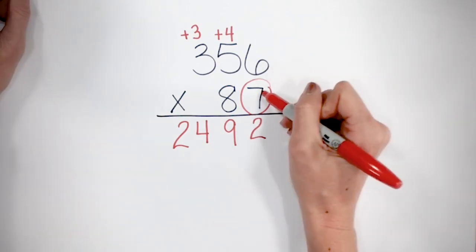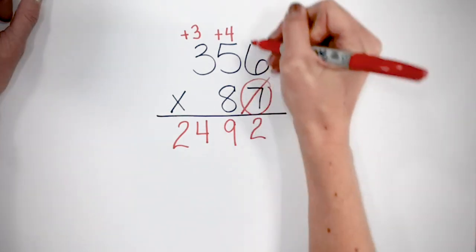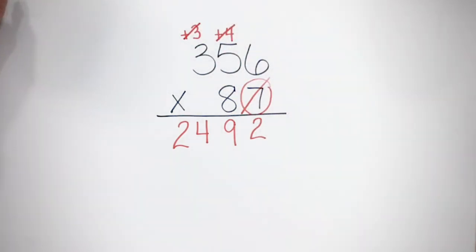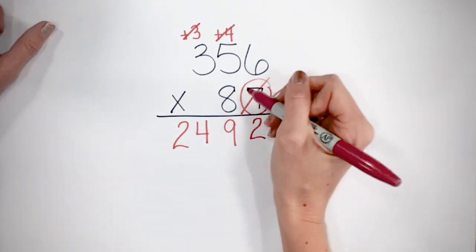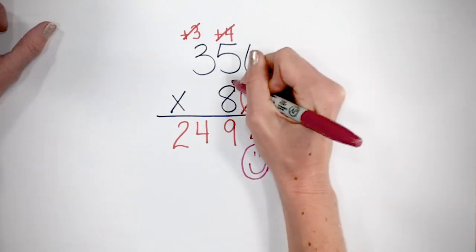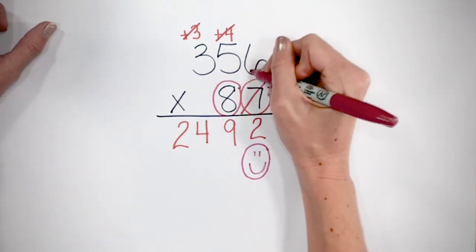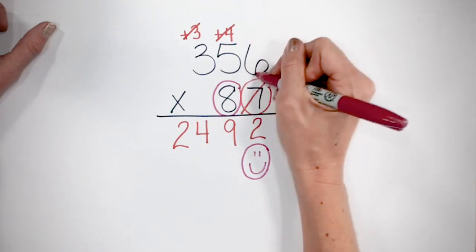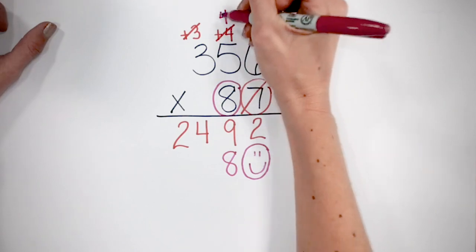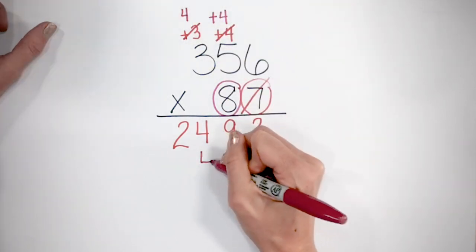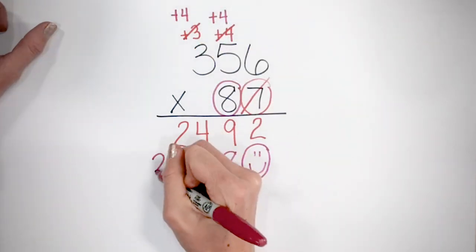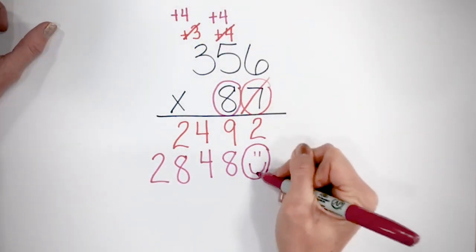I'm done with my ones place, so I'm going to cross this out, cross out all the numbers I've added, and grab my next color. We're done with the ones — we're happy about that — so we're going to put our zero placeholder down here. Now let's start multiplying our tens place by every number on top. 8 times 6 is 48. 8 times 5 is 40, plus 4 is 44. 8 times 3 is 24, plus 4 is 28.